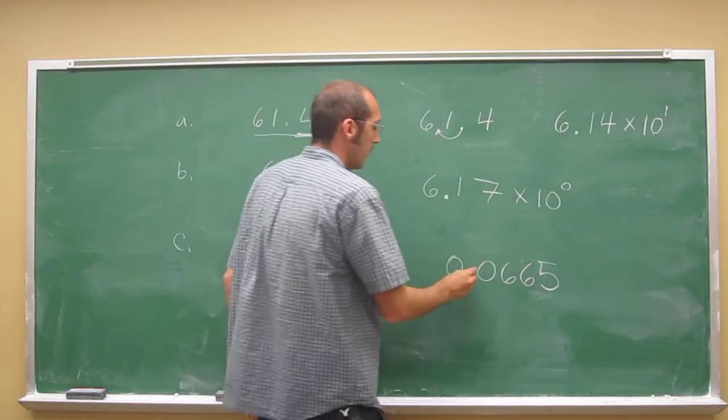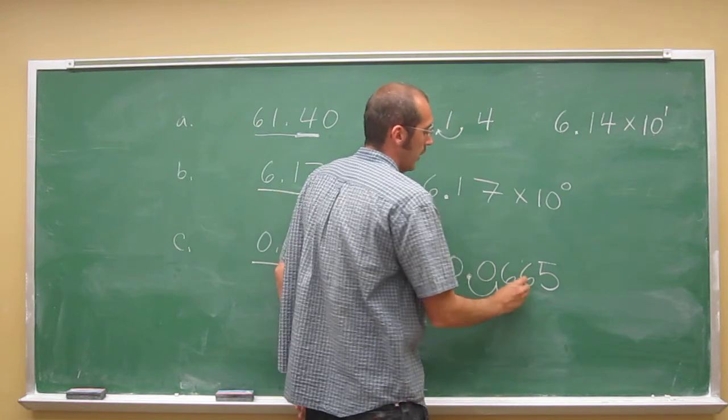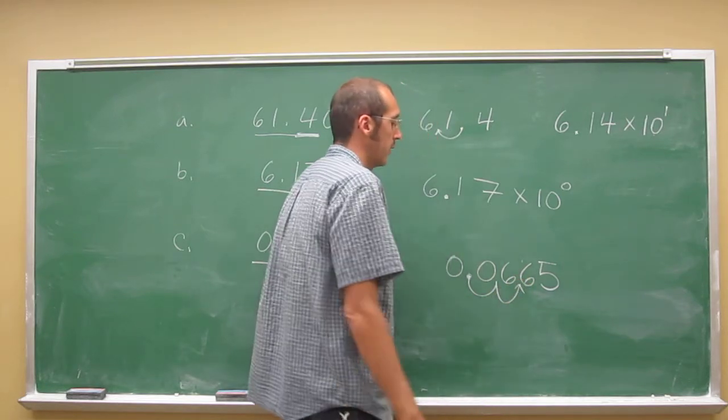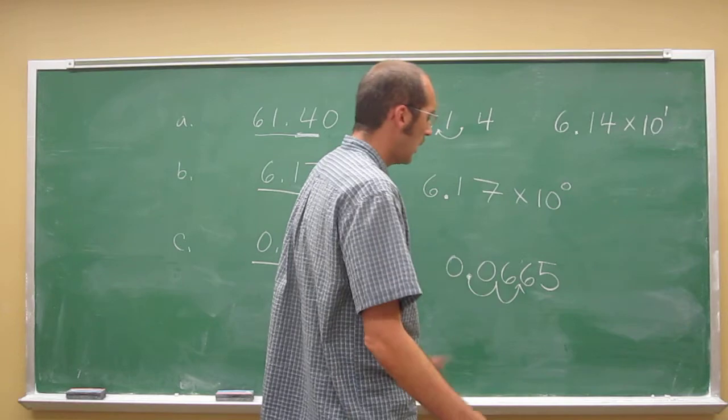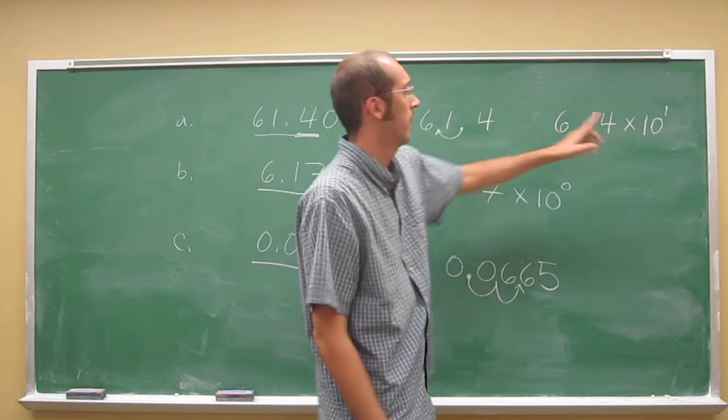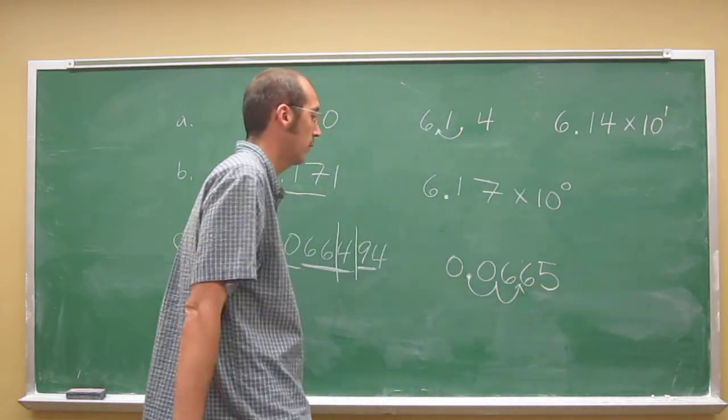Here we've got to do it the other way, 1, 2. So you get two spaces to the right. Remember, to the left, it's going to be a positive exponent. To the right, it's going to be a negative one.